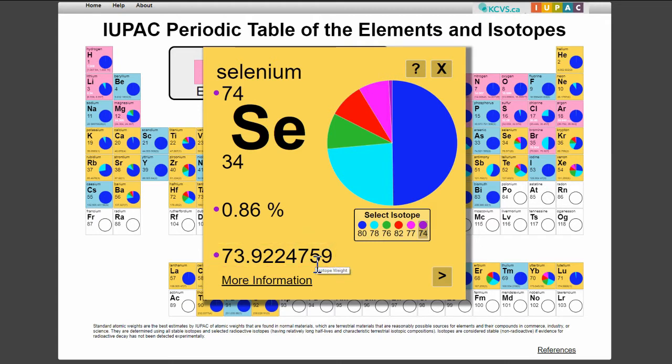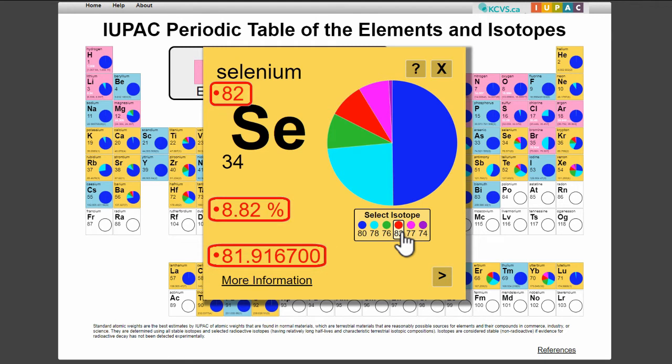Red numbers, like those for selenium-82, indicate that the isotope is radioactive, but stable enough to be included in the calculation of standard atomic weight.